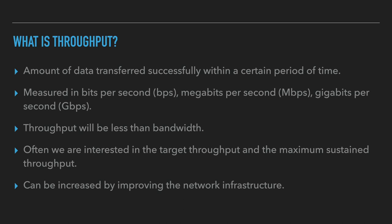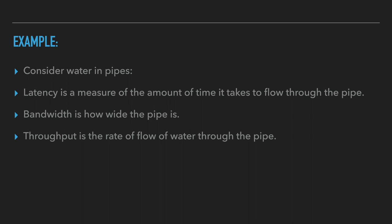We can increase throughput by improving the network infrastructure. As an example to highlight the differences, let's consider water in pipes. Latency is a measure of the amount of time it takes to flow through the pipe, bandwidth would be how wide the pipe is, and throughput is the rate of flow of water through the pipe.